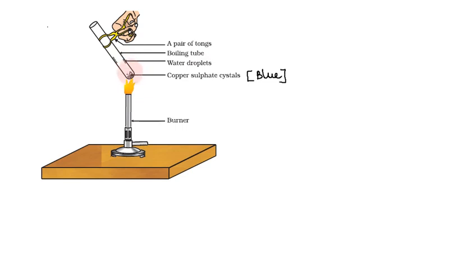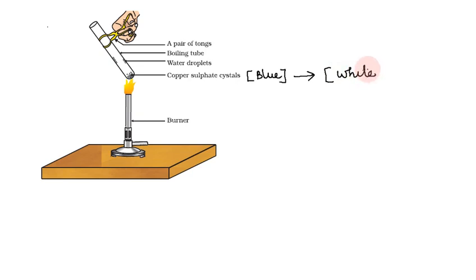We have the water removed. We will show you water droplets in the inverted test tube. This is the copper sulfate crystal. We will observe it change color — it will change to white.